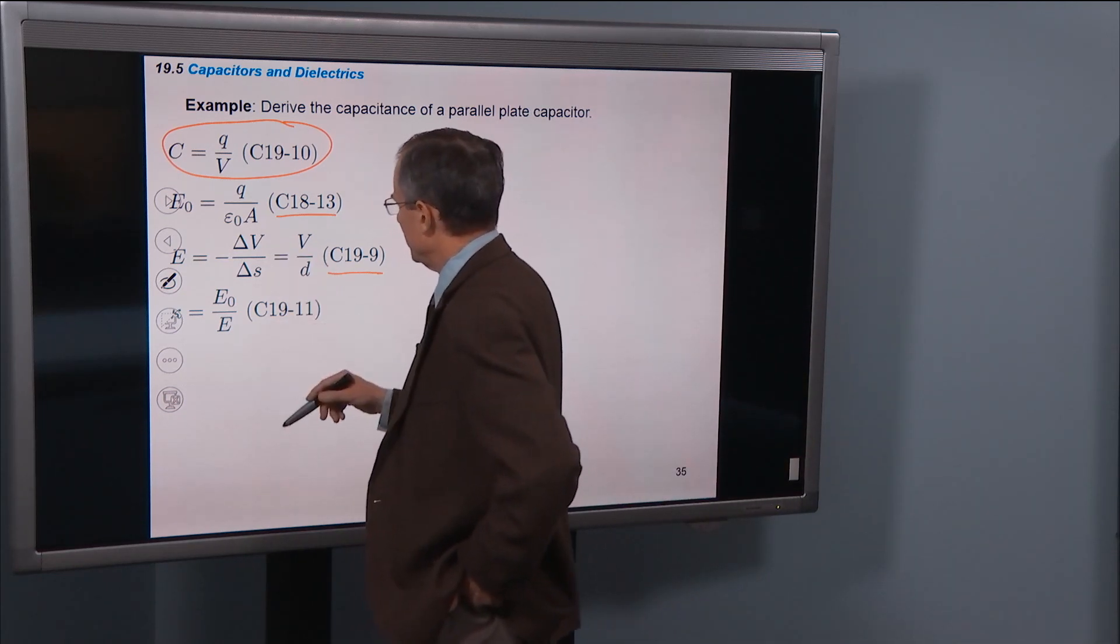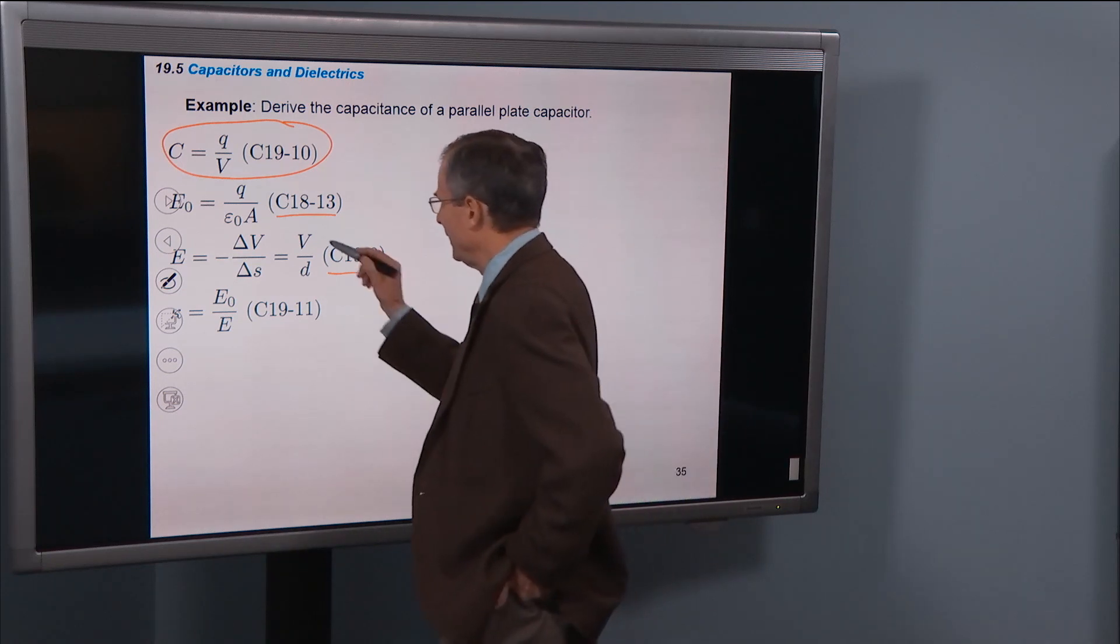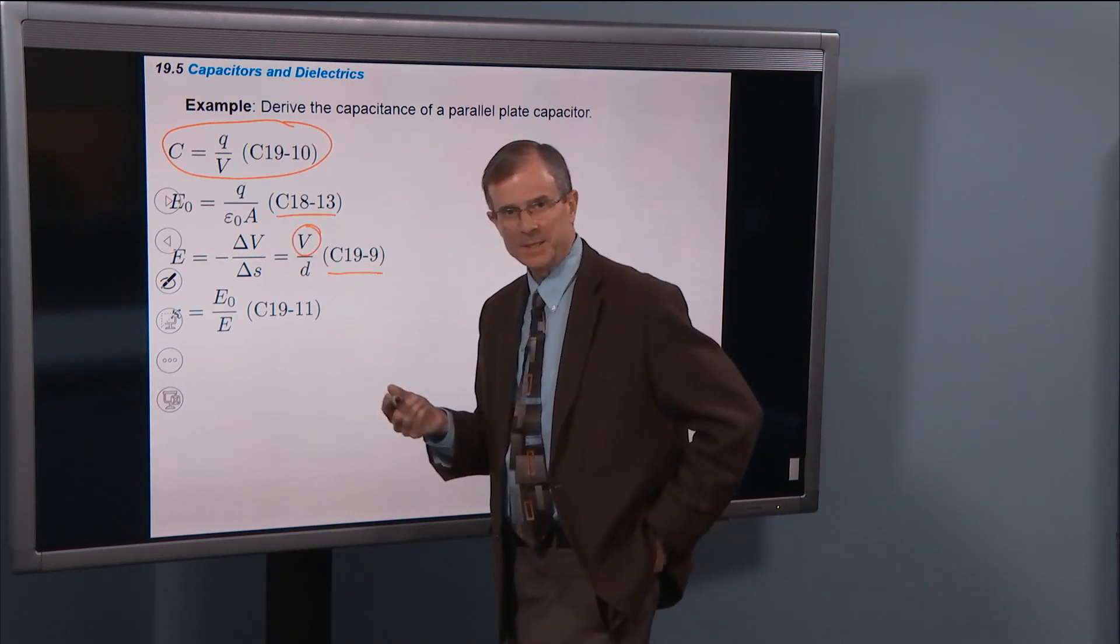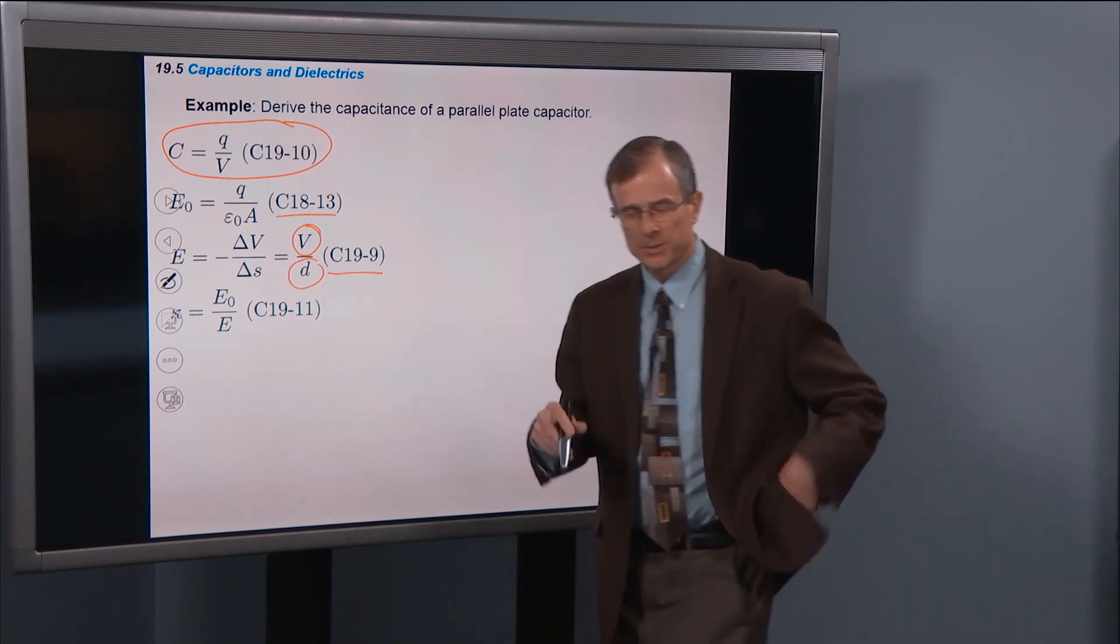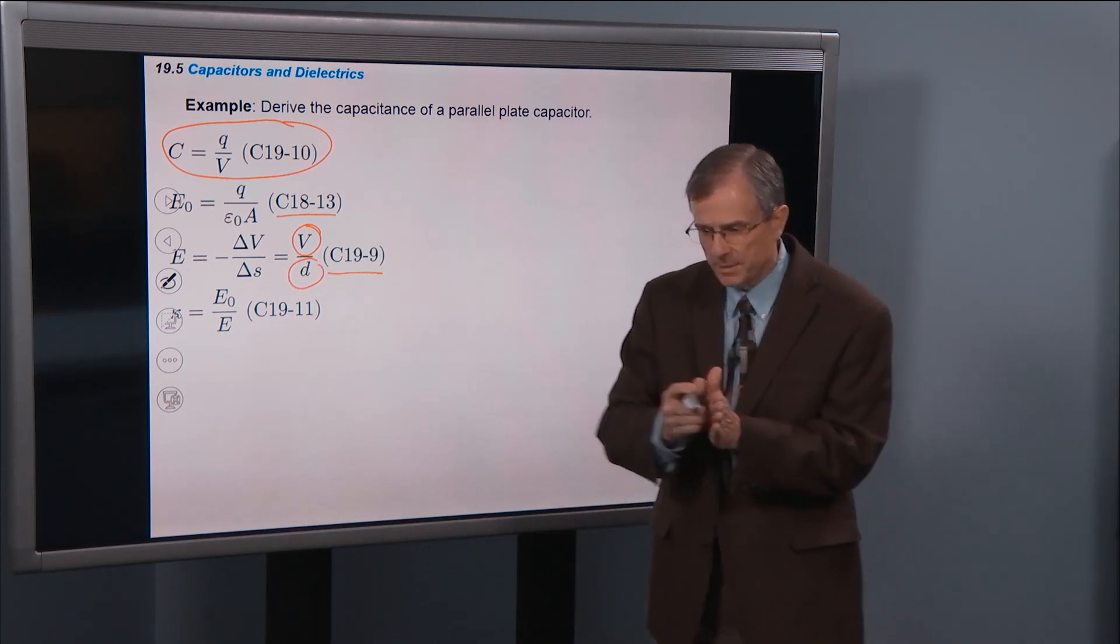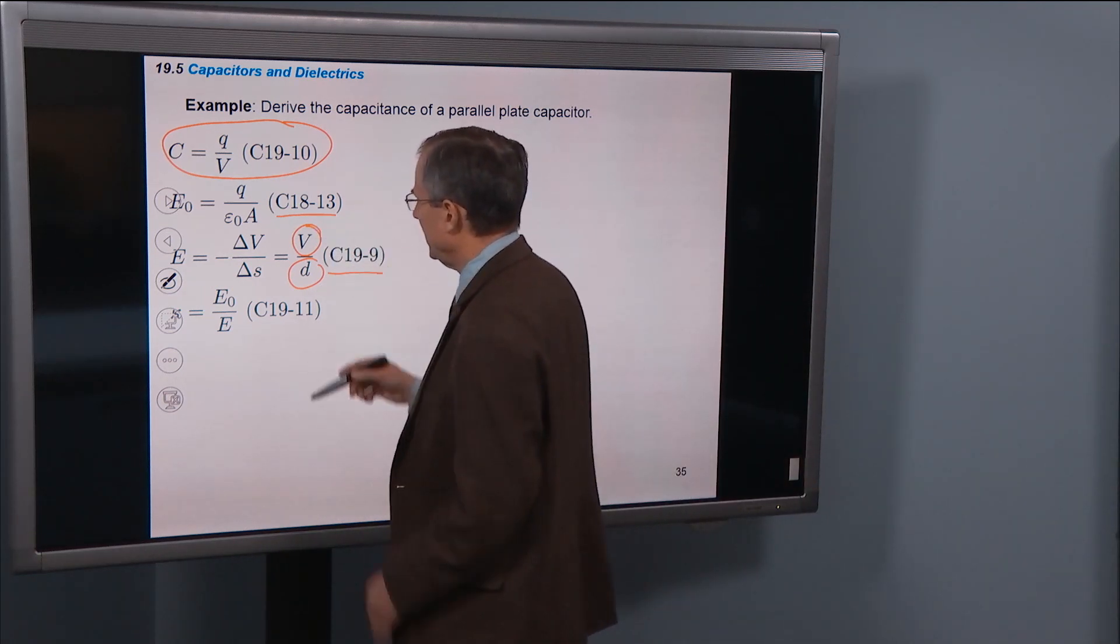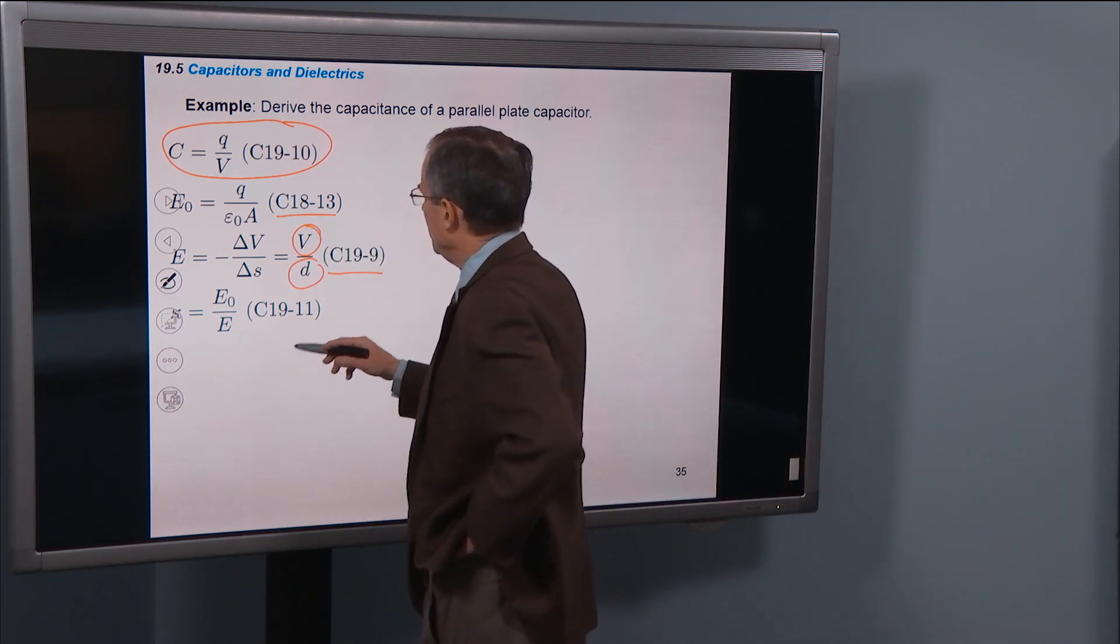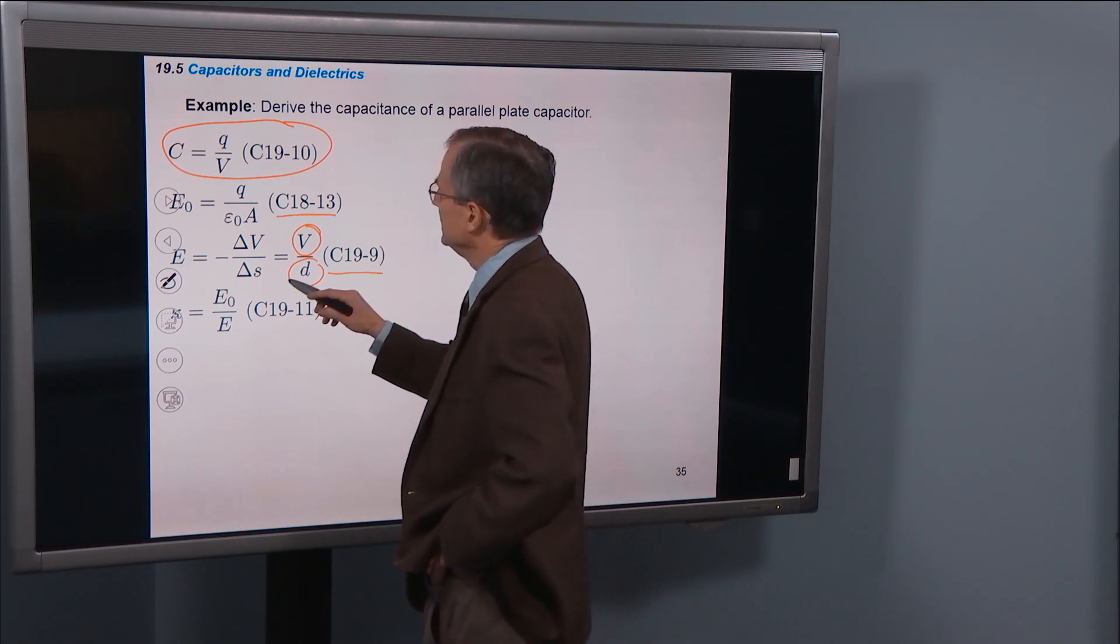Also a concept from earlier in this chapter. E is ΔV divided by Δs. We're calling ΔV, V now. So remembering that it's a potential difference. And then the distance between the capacitor plates is the displacement that we're going through. So that's V over d. Then we put it all together.